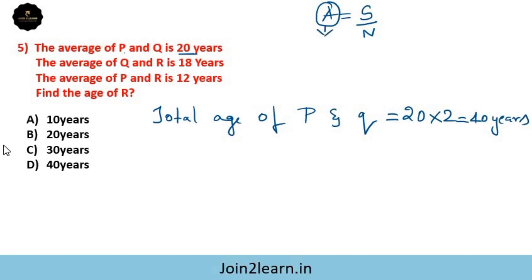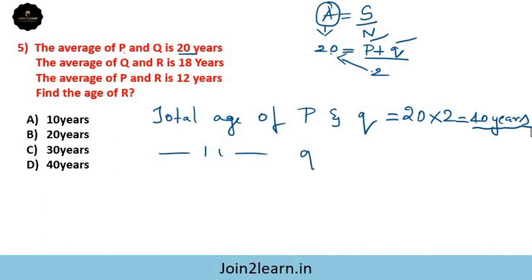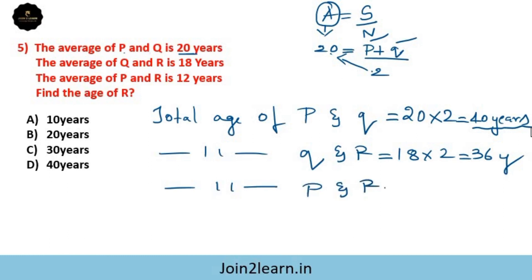Total age of P and Q: average 20 into 2 equals 40 years. Total age of Q and R: 18 into 2 equals 36 years. Total age of P and R: 12 into 2 equals 24 years.